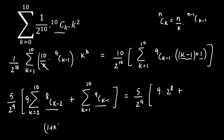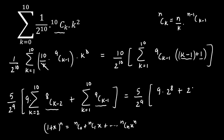A quick justification: if you expand (1+x)^n, you get nC0 + nC1·x + ... + nCn·xⁿ. Putting x = 1 gives nC0 + nC1 + ... + nCn = 2^n. Using this logic, the first sum is 2^8 and the second sum is 2^9.